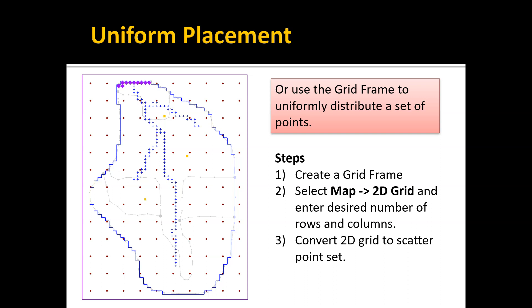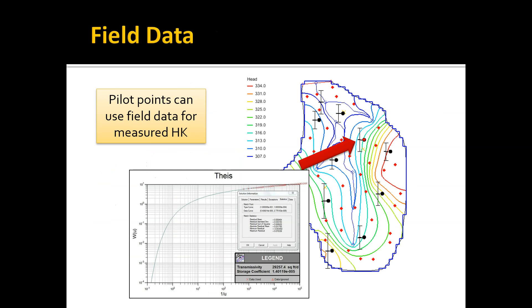Then you convert that 2D grid to what is called a scatter point set, and that scatter point set becomes your pilot points. In this case, I would probably go in after this was created and delete some of these extra points out here on the fringe because they're not really going to help you and they're going to result in a much larger run time. This is a lot of points. If I were doing this particular model, I'd probably use fewer rows and columns. This is actually one of the exercises we'll be doing in class and is part of one of the GMS tutorials for the pilot point method.